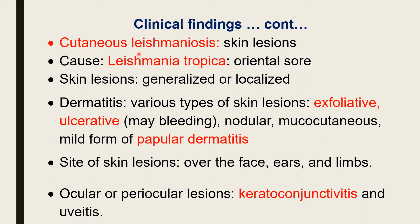There are two forms of the disease: one is cutaneous leishmaniosis and the other is visceral leishmaniosis. Cutaneous leishmaniosis — the word cutaneous means skin — so skin lesions are found. It is caused by Leishmania tropica and is popularly known as oriental sore when observed in Asian countries.